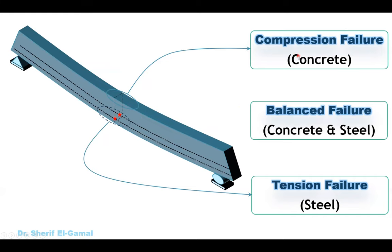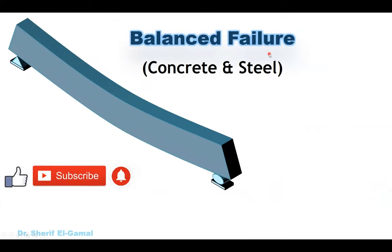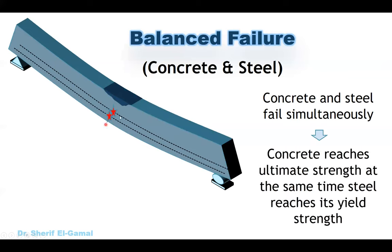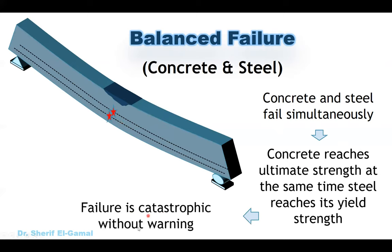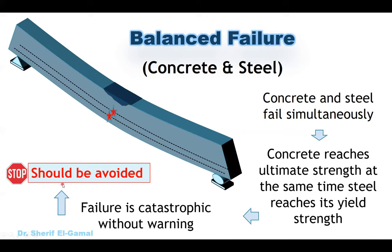Let's take each type one by one, starting with the balanced failure. The balanced failure occurs in the concrete and in the steel at the same time — they fail simultaneously. This means the concrete will reach its ultimate strength and the steel will reach its yield strength at the same time. This results in a catastrophic failure without warning, because concrete is a brittle material which fails suddenly. Therefore, this type of failure should be avoided when we design a reinforced concrete flexural member.